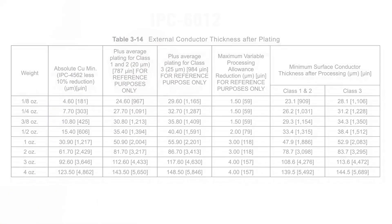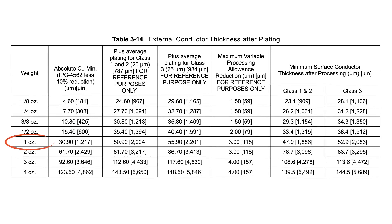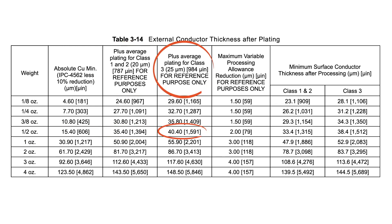So let's see what happens when a customer calls for one ounce finished. We know that the IPC minimum one ounce copper weight equates to 30.9 microns, or 1.217 mil. So if we start with half ounce — 15.4 microns, or 0.6 mil — plus plating of 20 microns for class 2, or 25 microns for class 3, and then allow for process reduction of 2 microns, we can see that we will finish with 33.4 microns, or 1.3 mil, for class 2, and 38.4 microns, or 1.5 mil, for class 3. This is pretty close to the one ounce equals 35 microns perception, but this is a different story as copper weights increase.